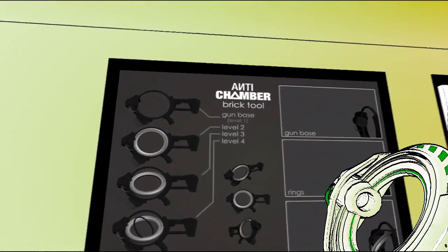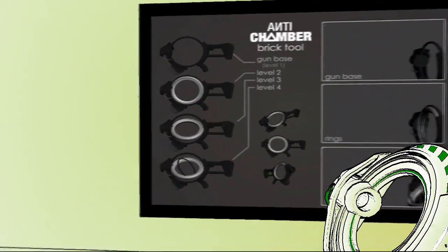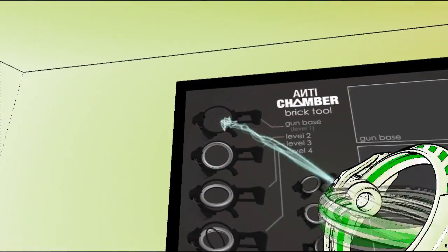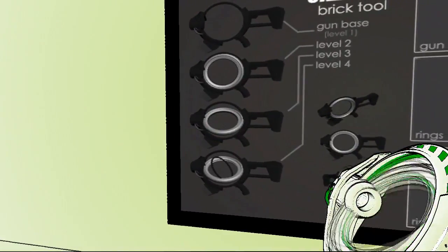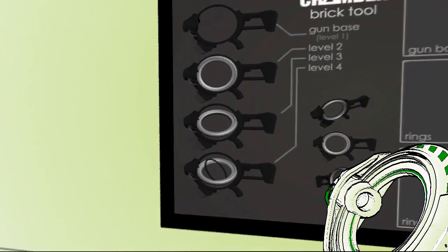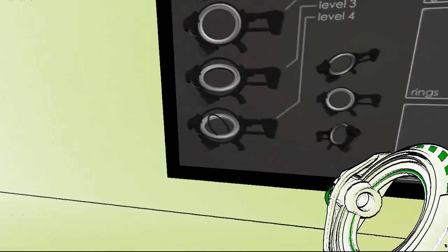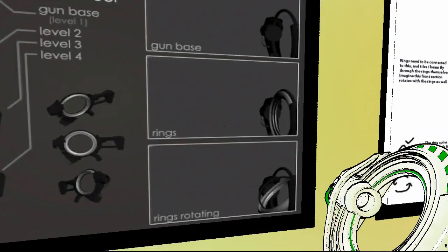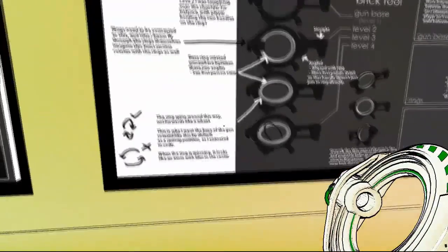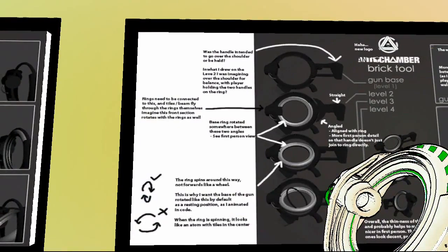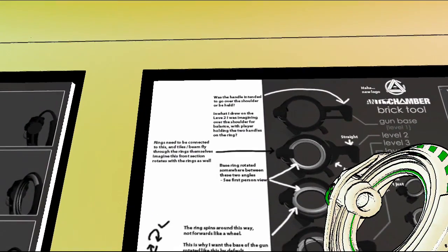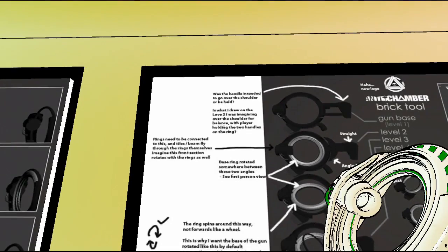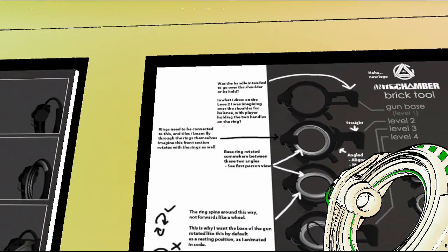Antechamber, brick tool, gun base, level one, two, and three. So level one is no inner ring. Level two is the inner ring. Level three... I guess it has two rings? Or something? I don't know. Level four has, yeah, two rings definitely. The ring is rotating. Like this is, yeah, it should be intended to go over the shoulder or be held. And what I drew is level two I was imagining over the shoulder for the balance. With players holding two handles on the ring.